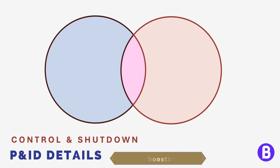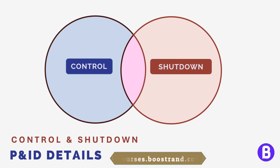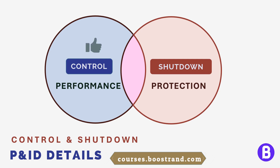Now that we have explored the various types of piping fittings and valves, let's take a deeper look at control loops and shutdown systems, which are considered the brain of the plant. The control system measures and controls plant performance, and the shutdown system protects the plant from any upset conditions that may cause safety issues. By having a well-designed control system and shutdown system in place, we can ensure that the plant runs optimally and efficiently.